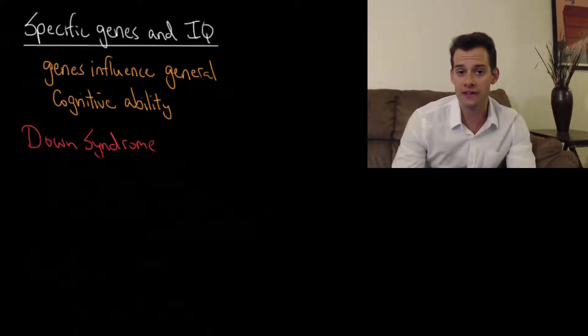Now you'll notice that all of these examples involve impairment, so they're associated with intellectual disability. That's because we have a better understanding of impairments to intelligence than we do for why some people have exceptionally high IQ, but maybe that's something we'll get to understand more clearly in the future.